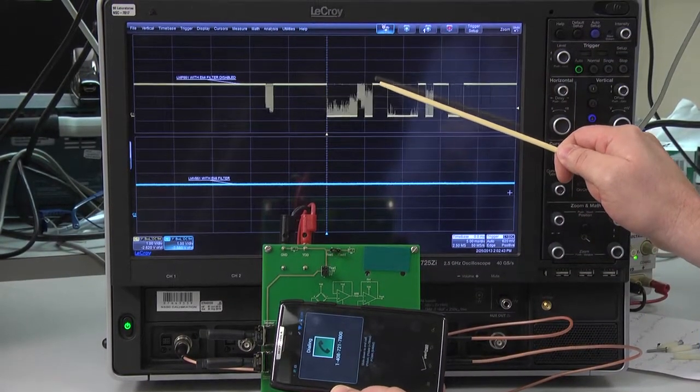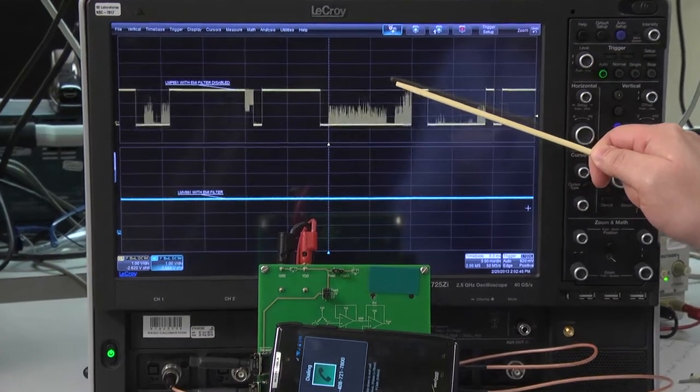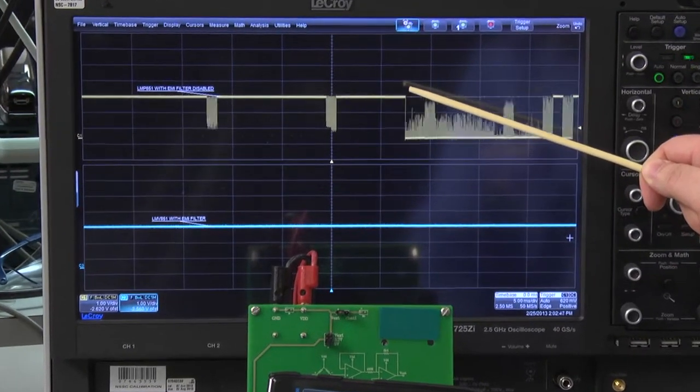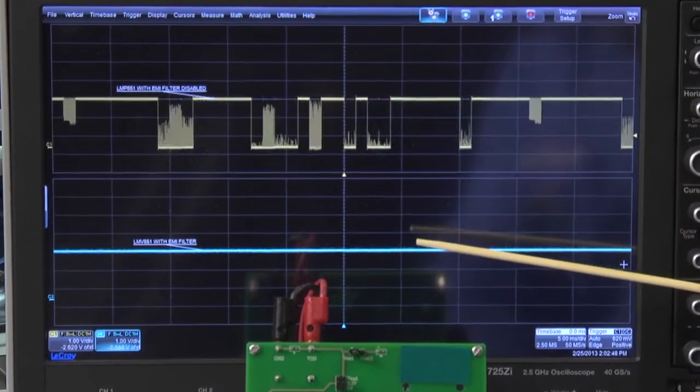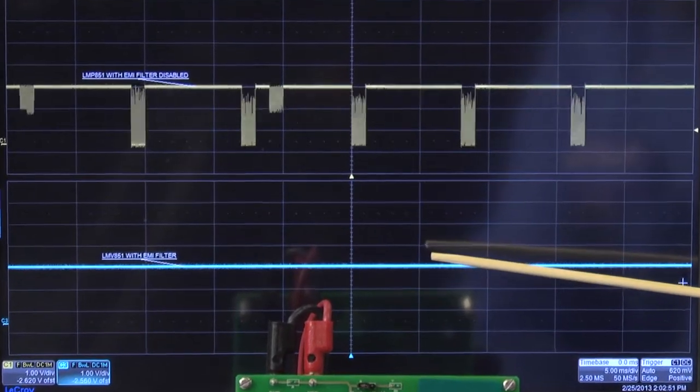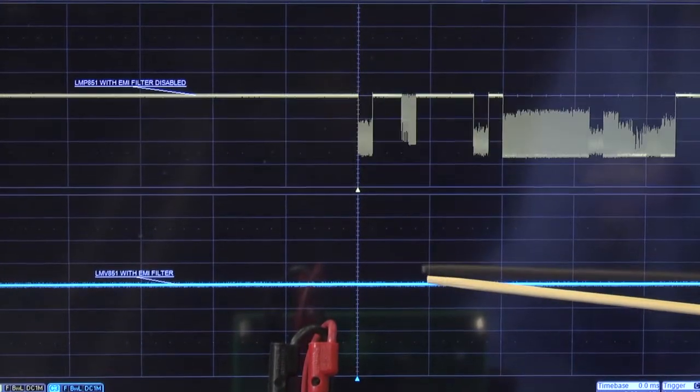The top channel is the amplifier without the EMI filter, the built-in EMI filter. And the channel below is the same amplifier but with the EMI filter enabled.